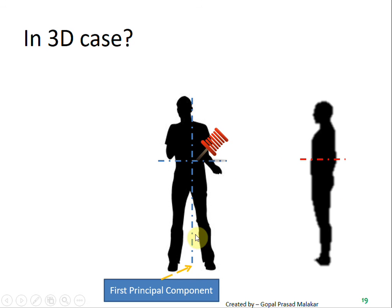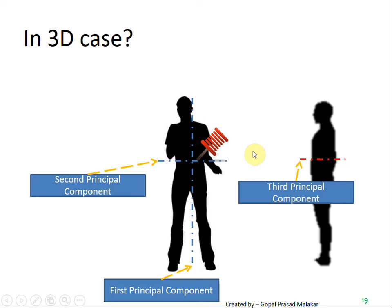So it is pretty obvious that this particular axis will represent the first principal component. Among the residual variance, this one is bigger than that one, so this represents the second principal component and this represents the third principal component.